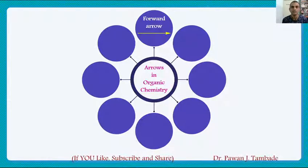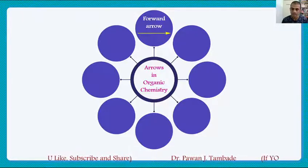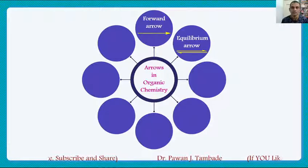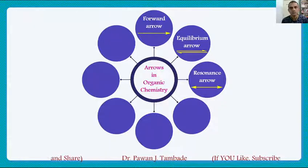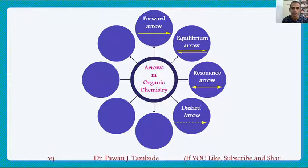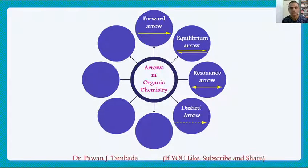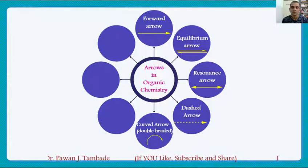The first one is the forward arrow, which we encounter normally in any book of organic chemistry. The second arrow notation is the equilibrium arrow. The third one is the resonance arrow. The next arrow notation, which we encounter seldomly in textbooks, is the dash arrow. Then the next one is the double-headed curved arrow.